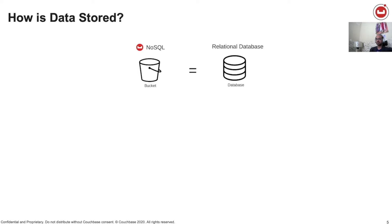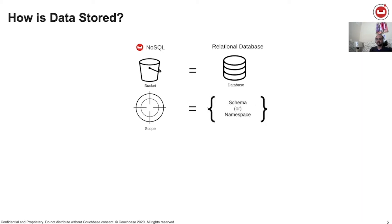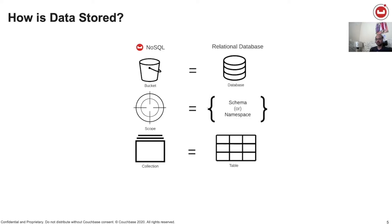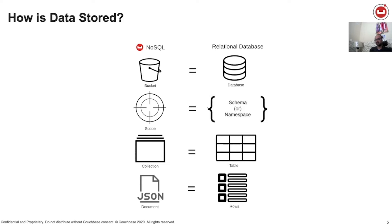Starting Couchbase server 6.5 in developer preview mode, scopes and collections were introduced to help further grouping data. These features will be fully made available in Couchbase server 7.0 when it goes GA next year. As compared to the relational database, a scope can be thought of as schema or namespace. On the other hand, collections can be compared to that of a table. Most use cases for using scopes and collections are when you're wanting to build a multi-tenant or a high-density application where grouping of data is essential. The smallest unit of storage is the document — you can think of it as rows inside tables. Couchbase is not limited to just JSON documents, but for the interest of this conversation, we'll stick to JSON.